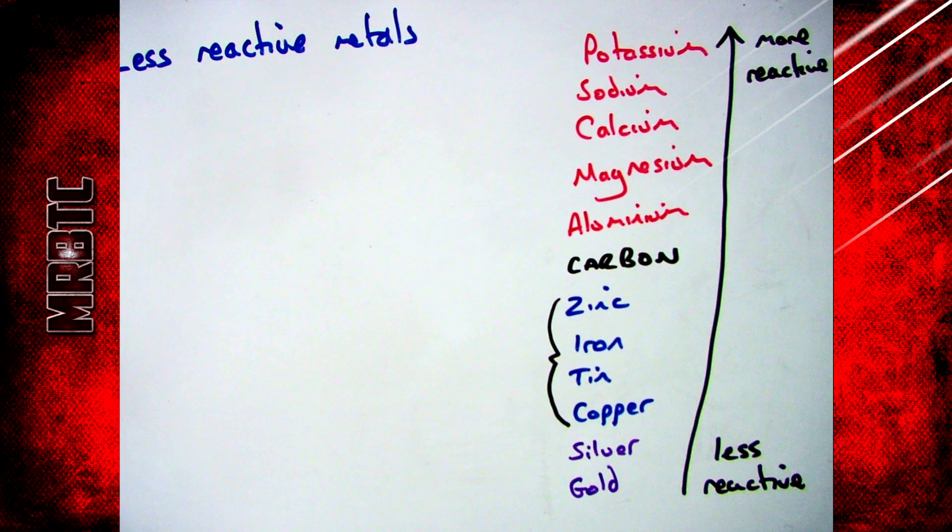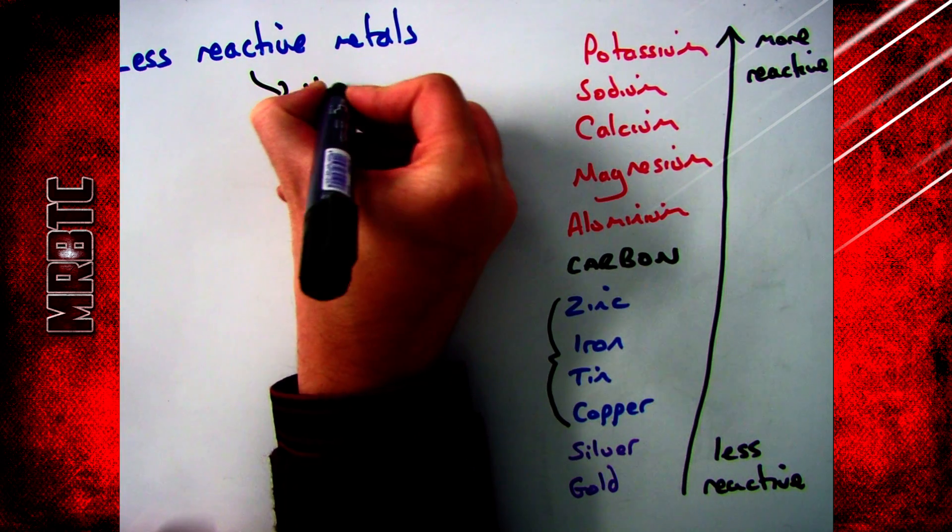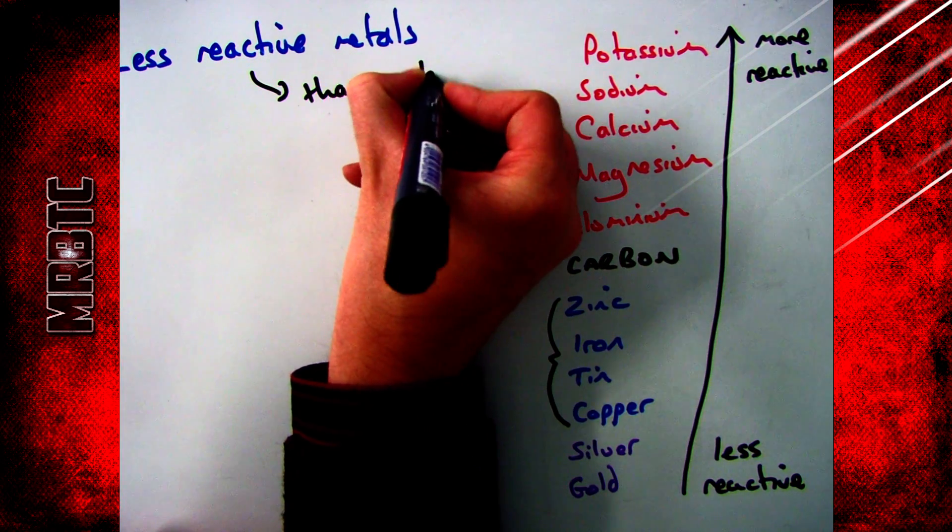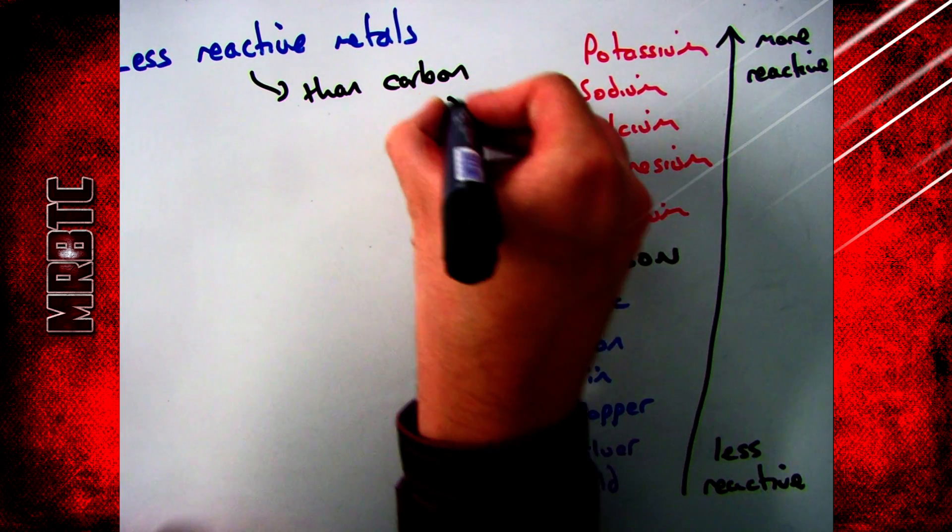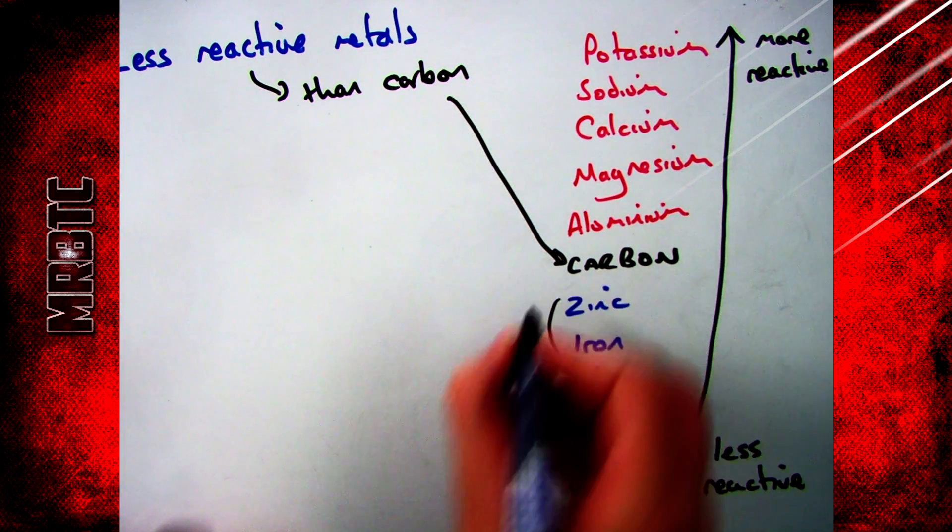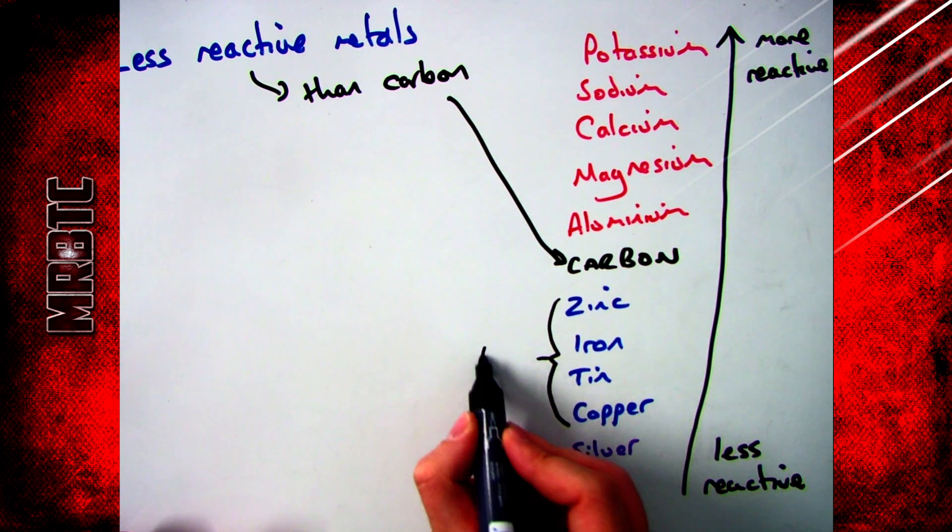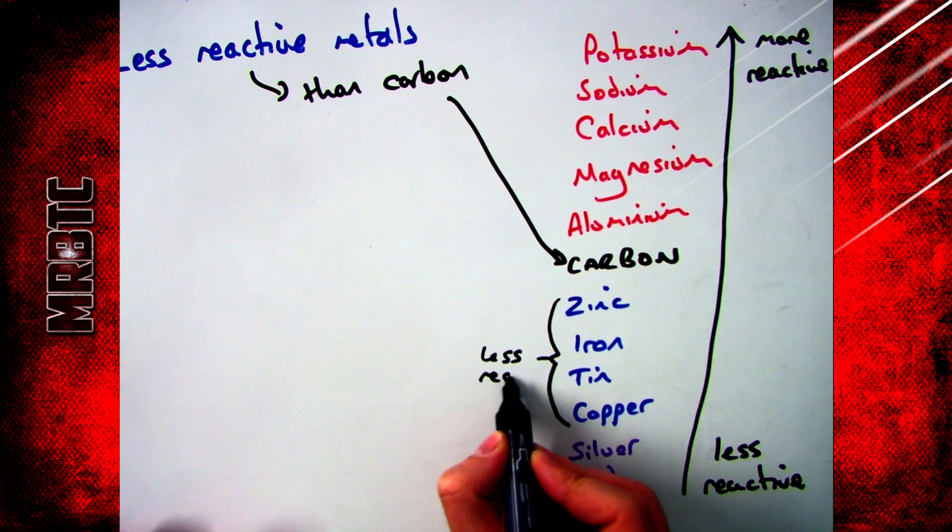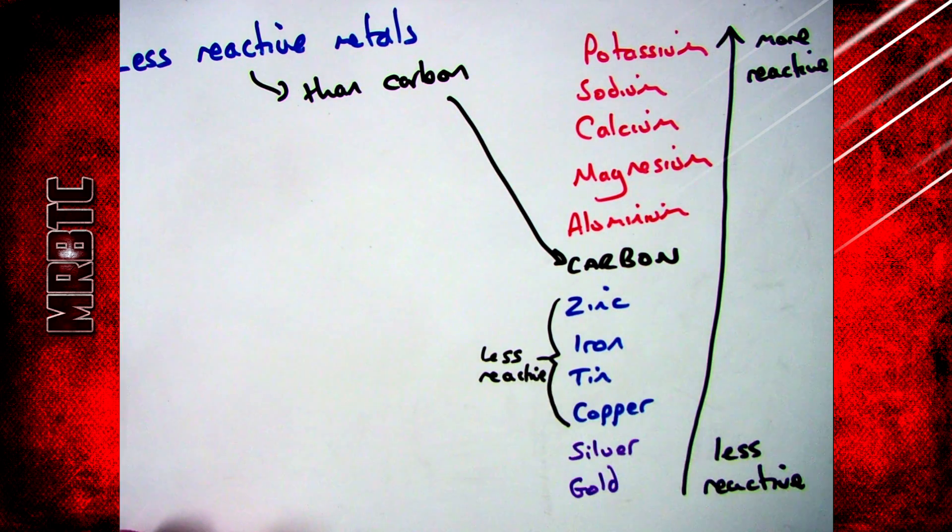If we move on to the less reactive metals, which are zinc, iron, tin and copper, these are all ones that are less reactive than carbon. As you can see from my list here, I've got carbon in there even though it's a non-metal. Everything below that is less reactive than carbon and anything above it is more reactive than carbon.